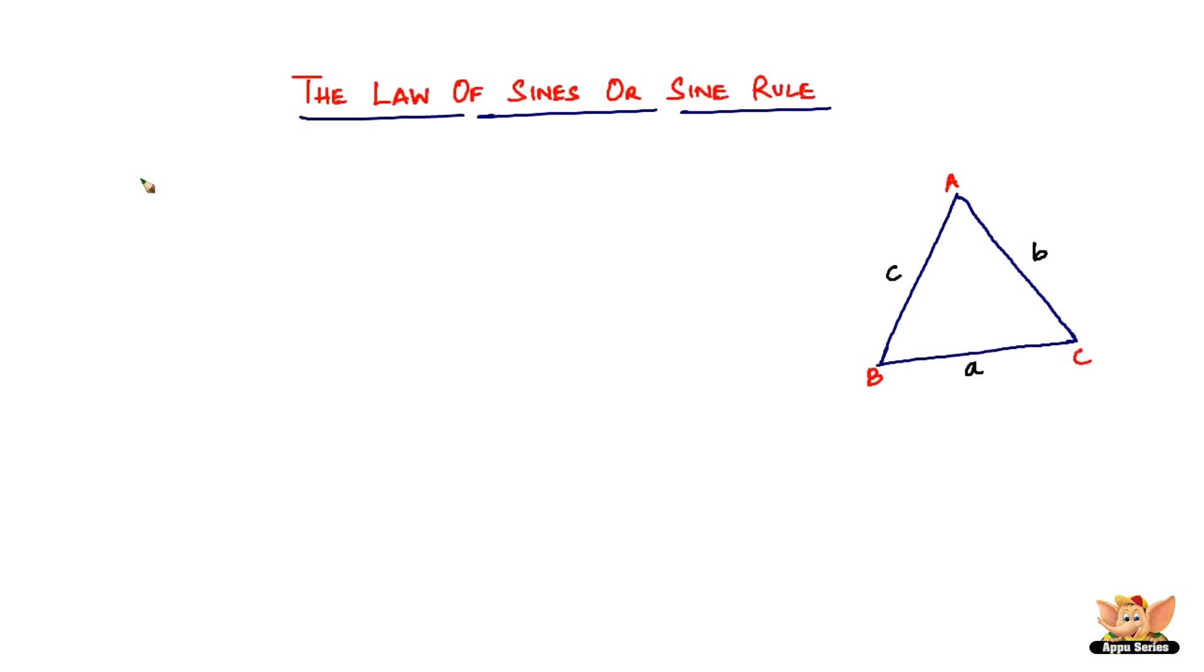So here is the actual statement: the sides of a triangle are proportional to the sines of the angles opposite to them. That is, in triangle ABC.